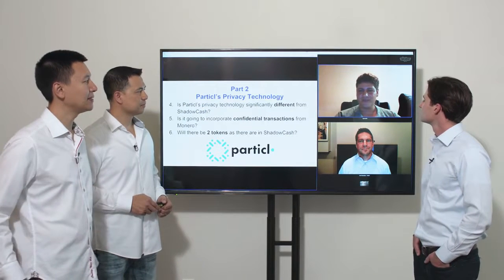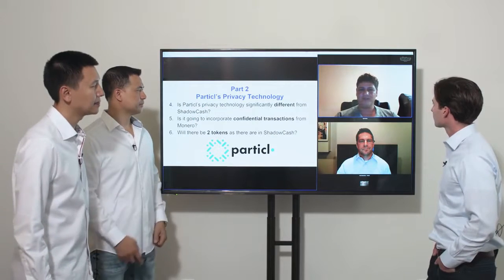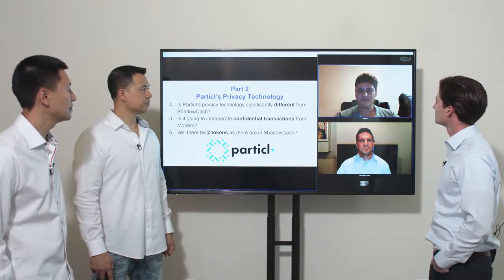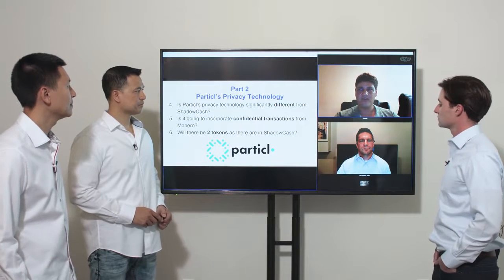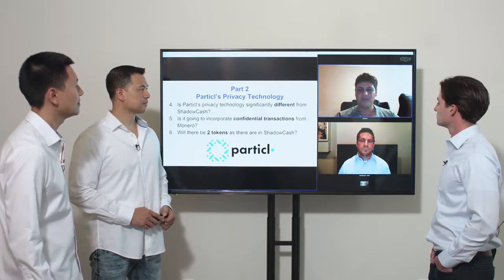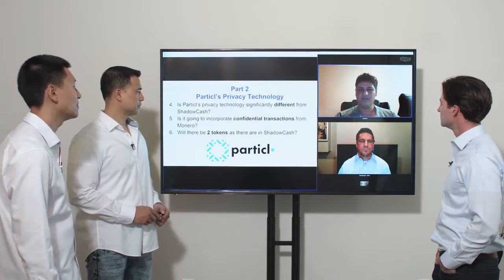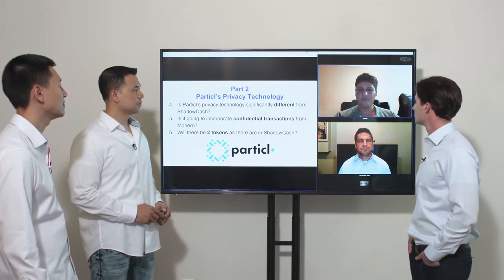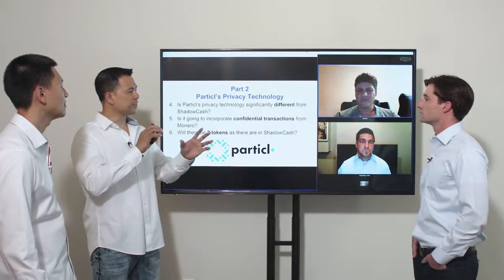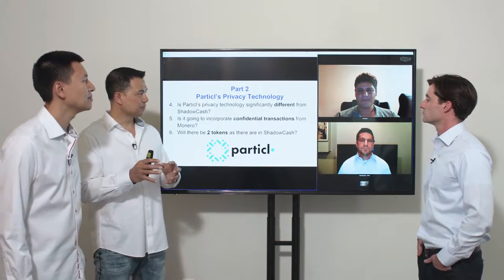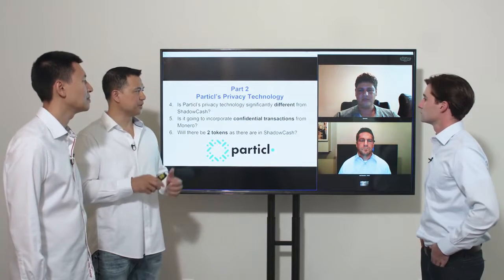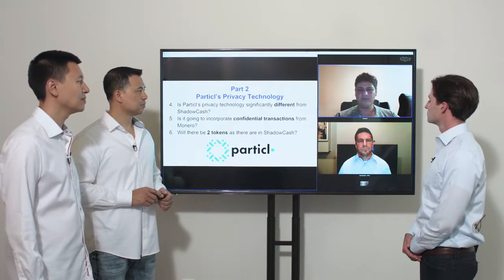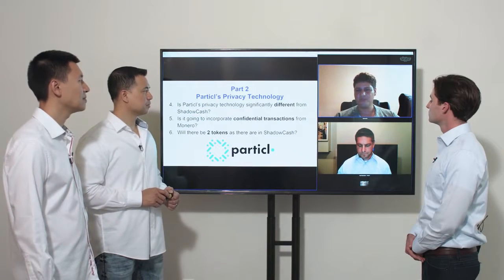Firstly, we're going to have stealth addresses and ring signatures — that'll be the same. We'll have the public balance and the private balance, but we plan to add confidential transactions and blinded transactions. So people will be able to send coins without there being a visible balance — only the sender and receiver will know the amount. Will you still be using the two-token system in Particle like ShadowCache?